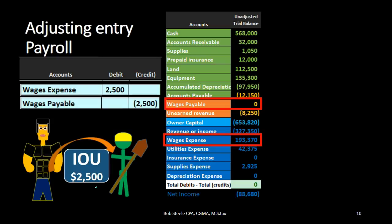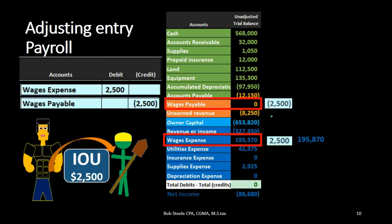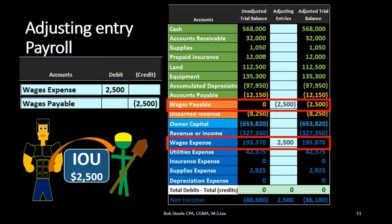We credit wages payable for $2,500. Posting this out: wages expense increases from $193,370 by $2,500 to $195,870, and wages payable goes from zero up to $2,500. Assets remain the same — nothing happened to the green accounts. Liabilities increased because we owe workers money they've already earned, and equity goes down because expenses went up, which brings net income down. Net income prior was $88,680; subtracting the $2,500 brings it to $86,180, reducing the entire equity section.